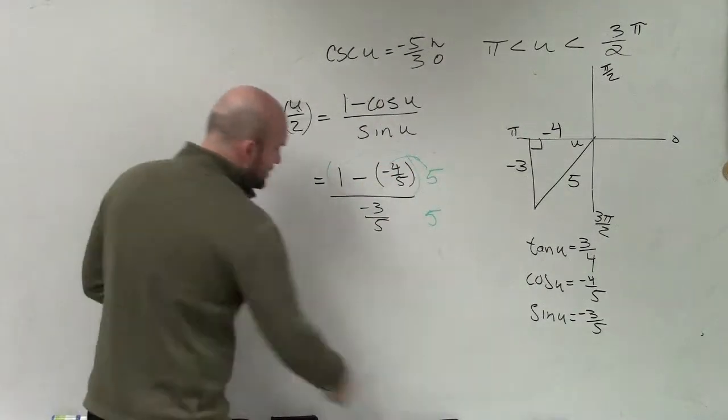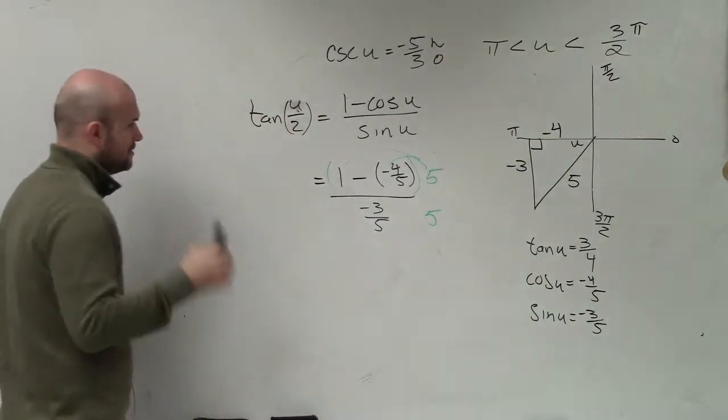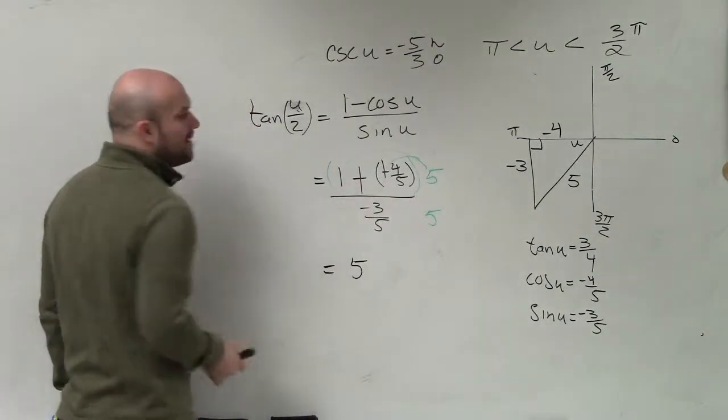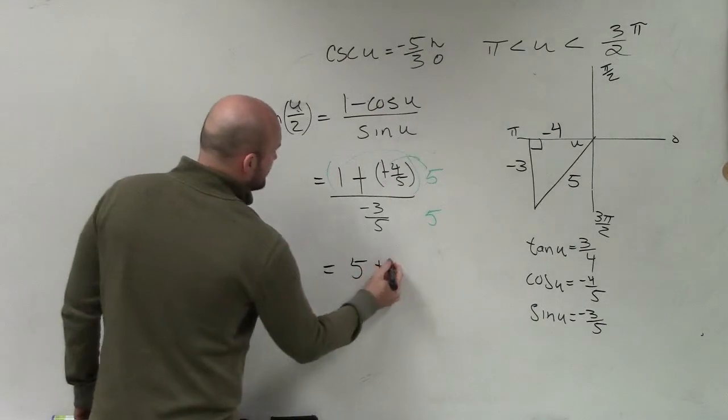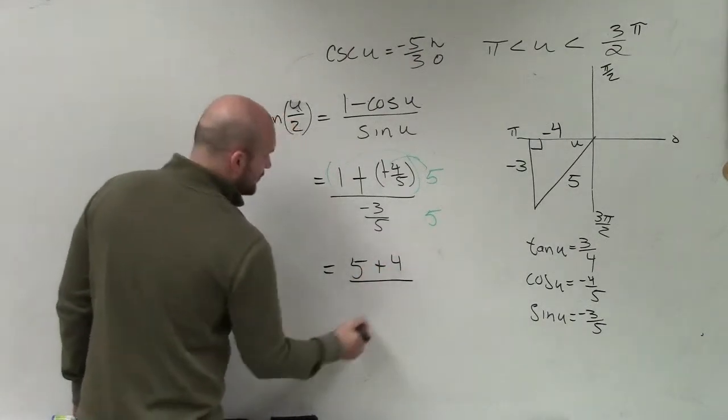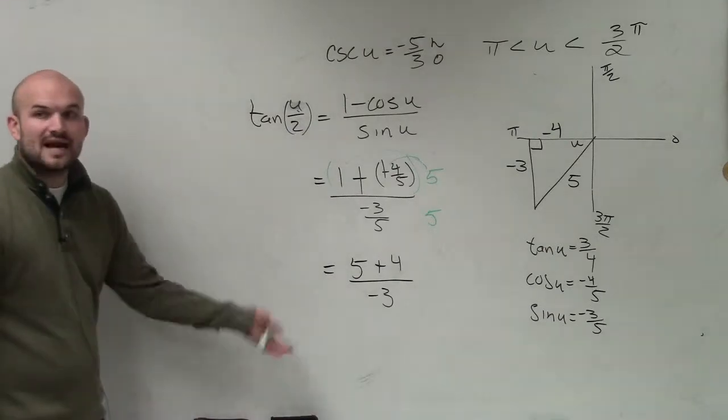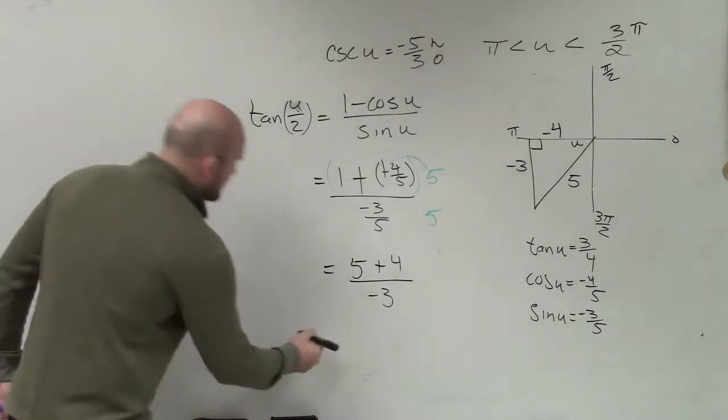And your next answer that you get is now going to be 5. That becomes a positive. So it's 5 plus 4 all over negative 3. 5 plus 4 is 9. 9 divided by negative 3 is negative 3.